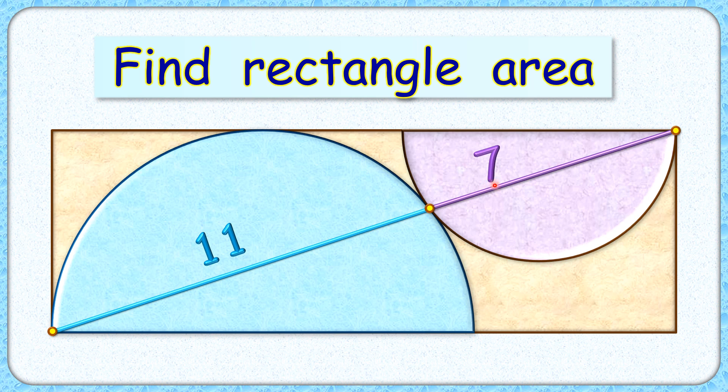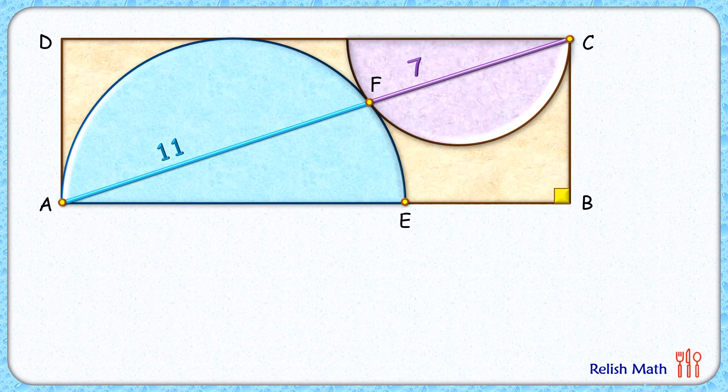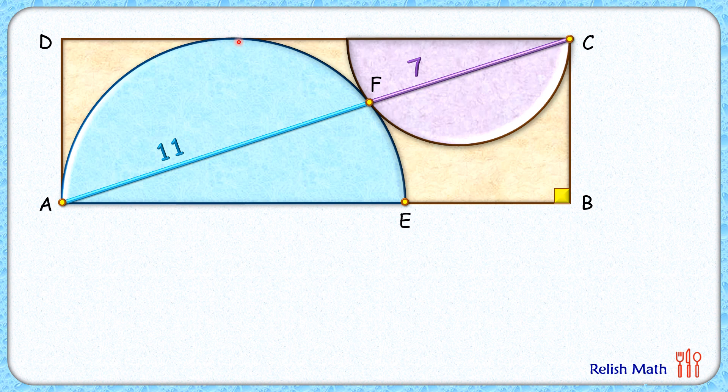The exciting part is with this limited data we have to find the area of the rectangle. Let's check this simple and elegant solution. Let's start by assuming the radius of this blue semicircle as R centimeters, and thus diameter AE will be 2R.